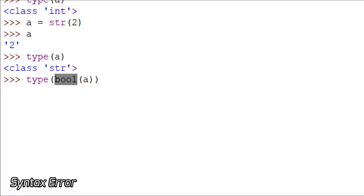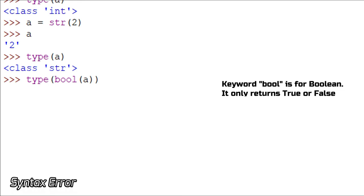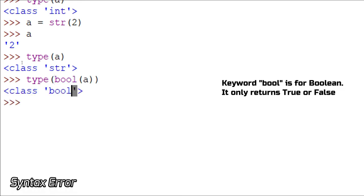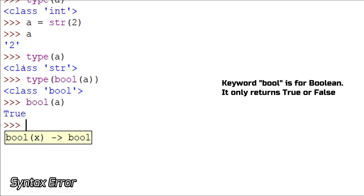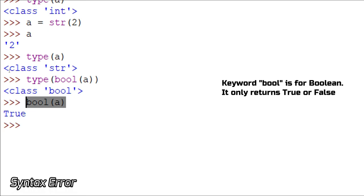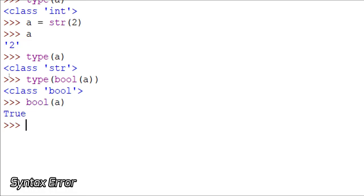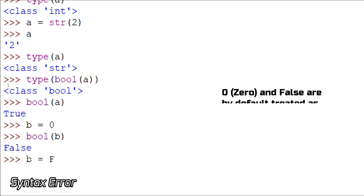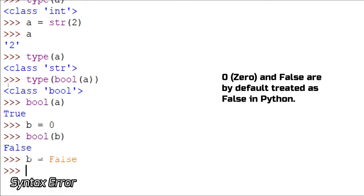bool is a keyword for boolean. As I mentioned in my previous video, boolean represents only True and False. Let's see what this returns — it returned bool. bool(a) returned True because I stored some value in a. But if I store b = 0, it returns False, because storing 0 or writing b = False will always return False. This is defined in Python itself.